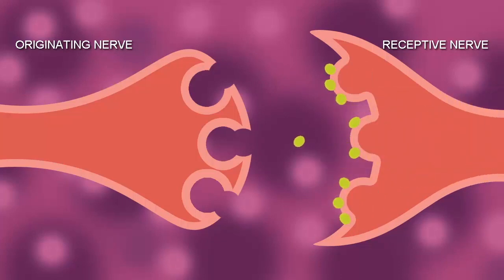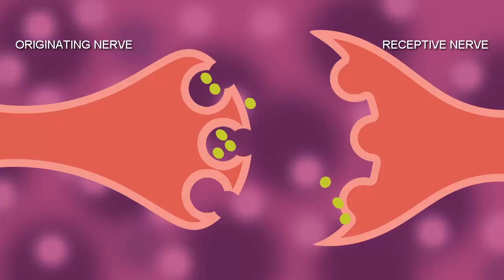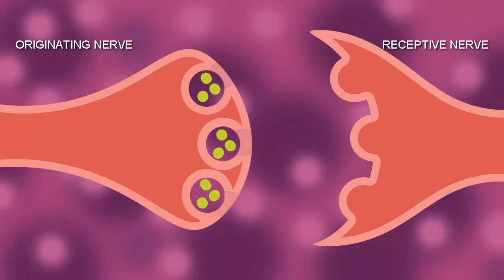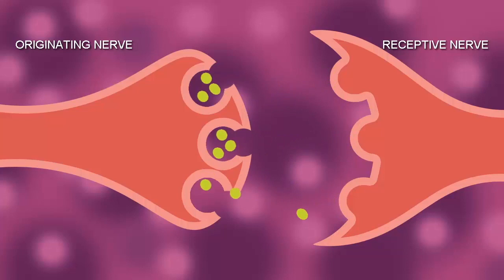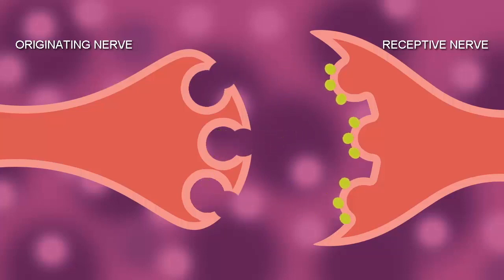After the neurotransmitter activates the receptors, it is recycled back into the vesicles to be used again. This recycling process is very important to the sustainability of the neurochemicals, and without recycling, the vesicles would become empty.